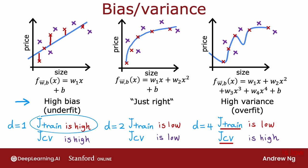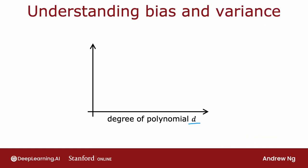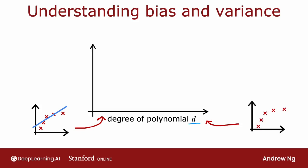Let's take a different view on bias and variance. I'd like to show how J_train and J_CV vary as a function of the degree of polynomial you're fitting. The horizontal axis of this figure will be the degree of polynomial D. Over on the left corresponds to a small value of D, like D equals 1, fitting a straight line. Over to the right corresponds to D equals 4 or even higher values where we're fitting a high-order polynomial.